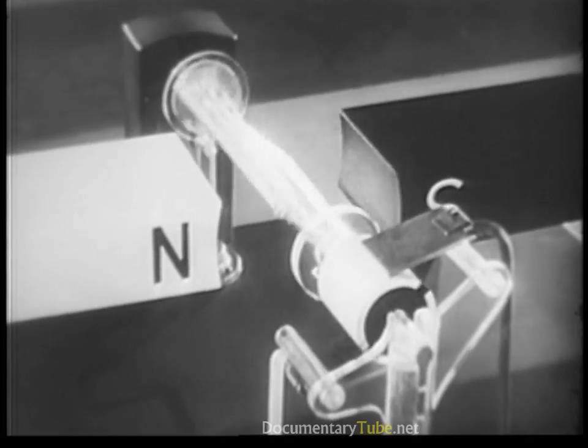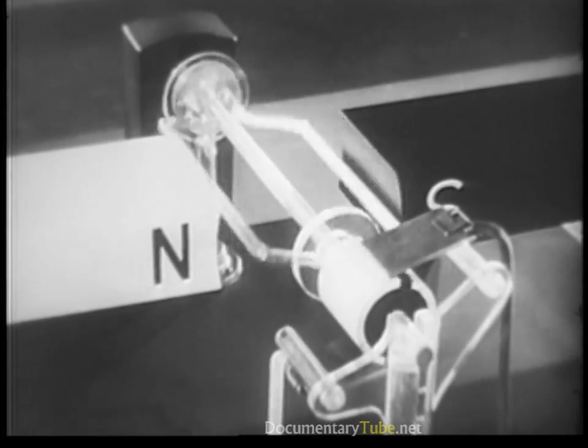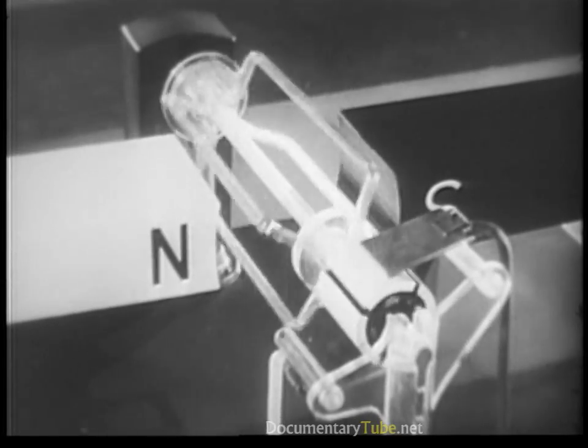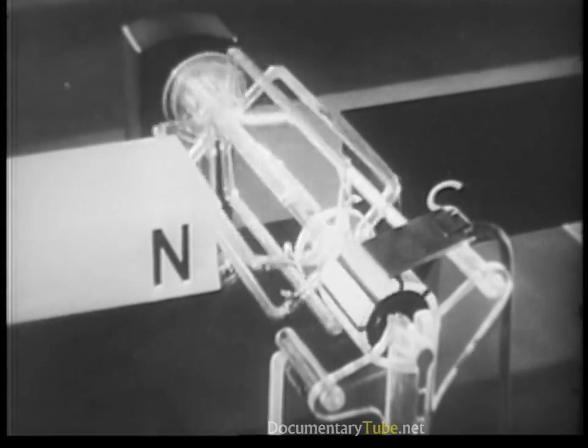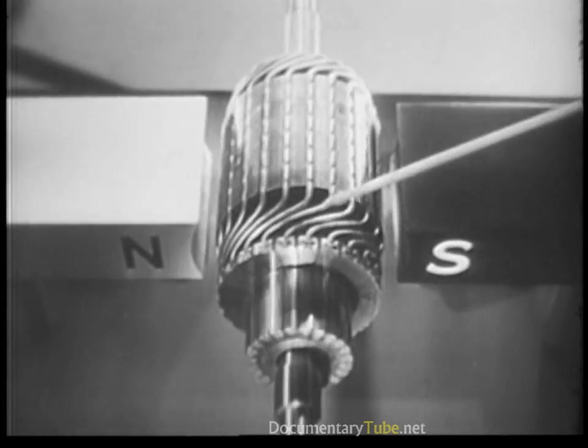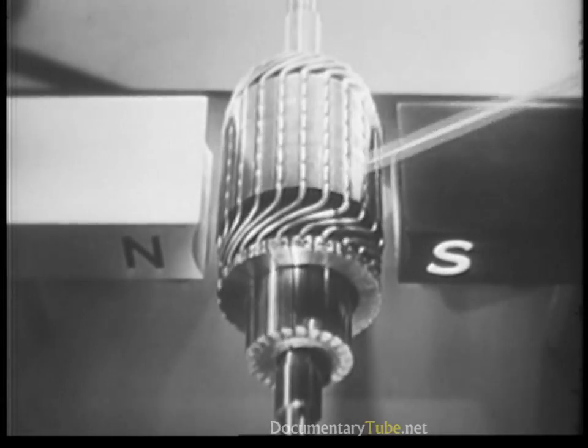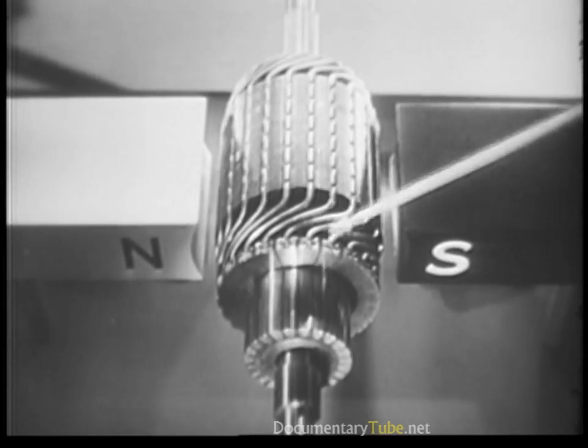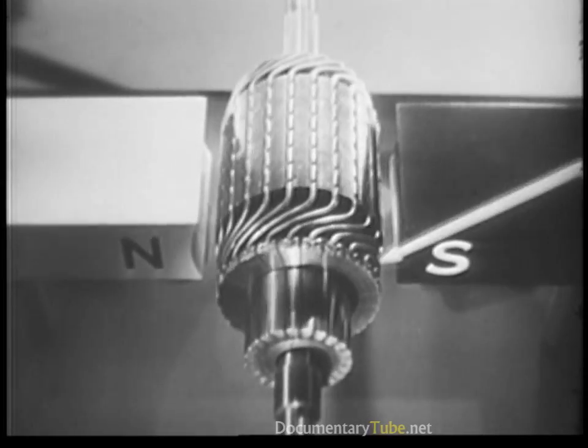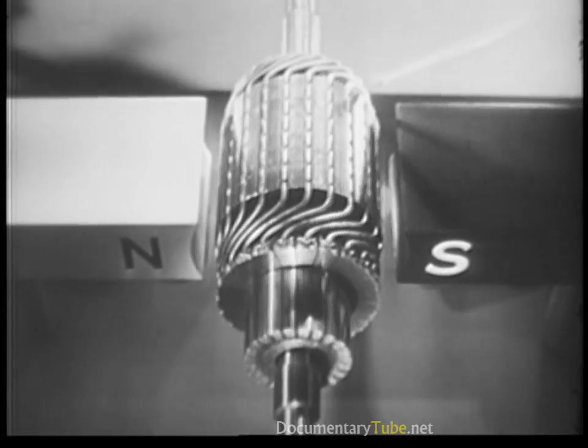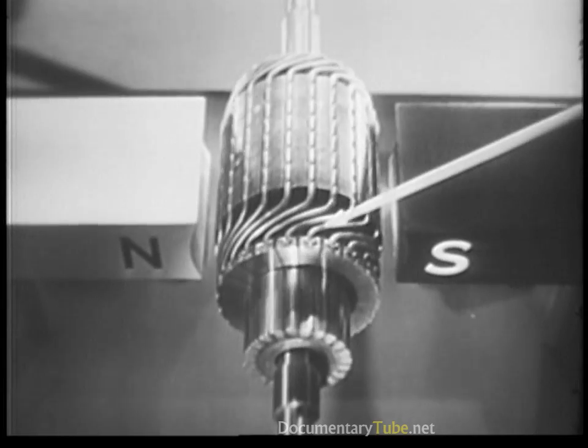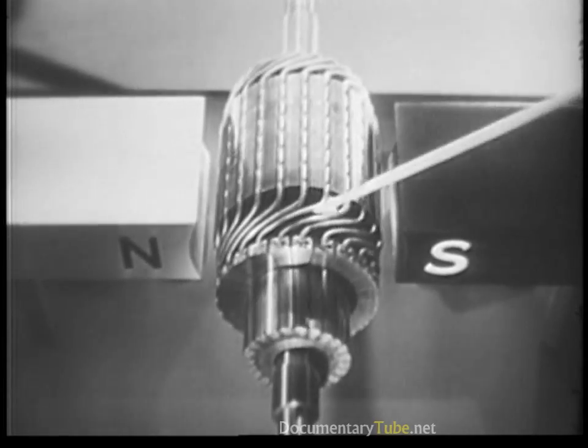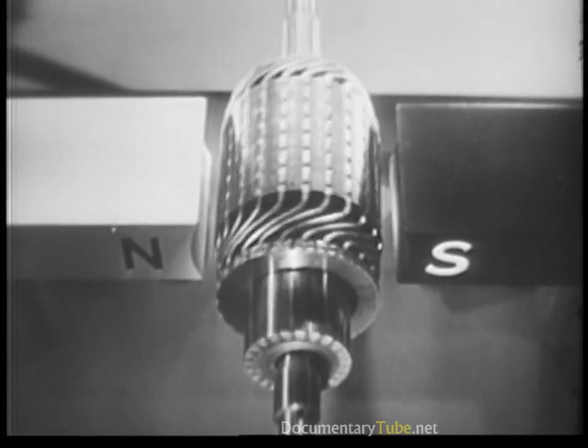However, since a single wire loop will not develop enough power to be of any consequence, many loops or windings are required. Each winding must have its own pair of segments. Now, if we space these windings around an iron core, we have what is called an armature. The actual connections and arrangements of the windings are such as to allow a maximum amount of current to flow through the armature coils when they are in their proper relationship to the pole pieces. This allows each winding to add its turning effort to the others, so that they all work together to rotate the armature, as the complete assembly is called.